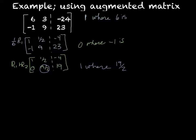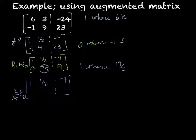If I multiply by the opposite fraction, 2/19, then I should get that. So that would be my top row not changing: 1, 1/2, negative 4. And if I multiply 2/19 to the second row, then 2/19 times 0 is 0. 2/19 times 19/2 cancels out to 1. And 2/19 times 19 is going to give me 2.